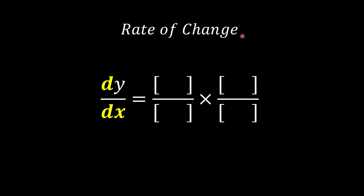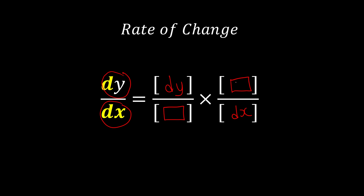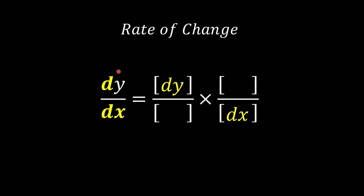Now let's see how to solve rate of change problems using the chain rule. These problems are more complicated where we don't have enough information to get dy over dx directly. Using the chain rule, you put the top quantity in the first slot and the bottom quantity in the last slot. The two middle terms must be the same, and we decide what goes in the middle based on what information the question provides. You always open up two fractions for chain rule, and the middle terms must cancel out.